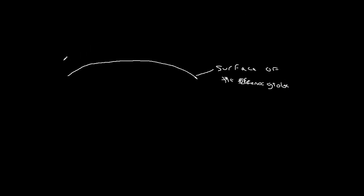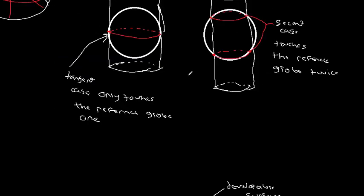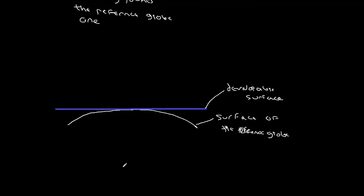I'm going to draw in blue here. This blue line here is going to be our developable surface. All I've done is cut this out and rotate it 90 degrees. So we have the piece of our developable surface, the surface of our reference globe, and the point where they intersect right here — this is our point of tangency.